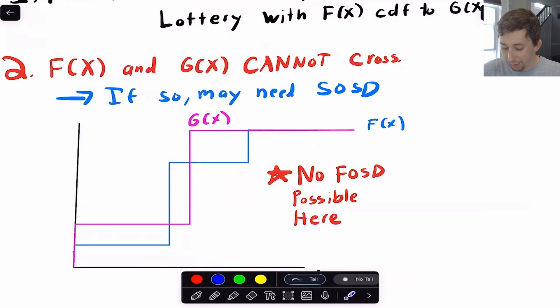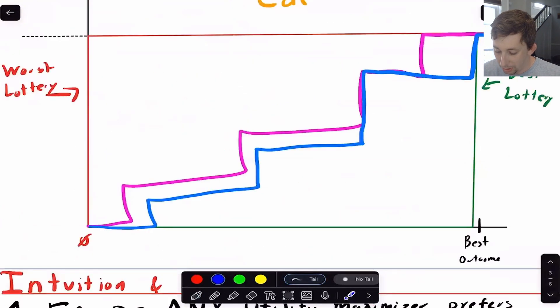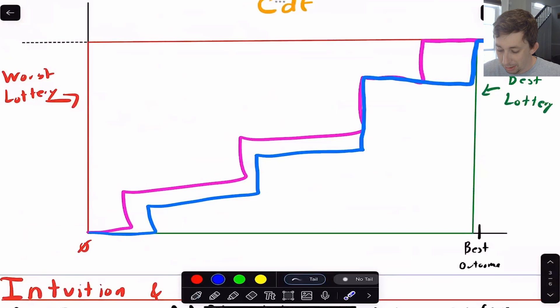Anyone that you find should pick F of X over G of X if F of X first-order stochastically dominates G of X. And the only way that anyone that you pick is going to pick F of X over G of X is if for all probabilities, F of X is to the right of G of X. So the only way that'll work is if it looks something like this where they don't cross, because anyone you find, anyone with any risk preferences will choose F of X over G of X because of this distribution. And so we would say that F of X first-order stochastically dominates G of X. I know it's a little confusing.